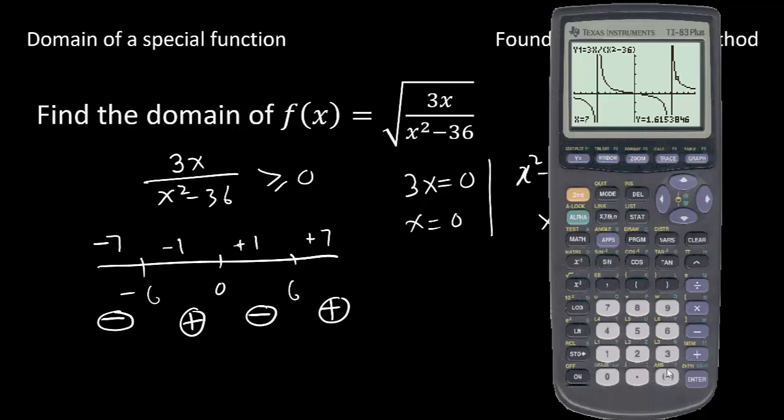So we write our domain as negative 6 to 0. 0 has closed. Negative 6 open. And then 6 to infinity, both open. And we connect with union symbol. And this is the domain of this function. And we are done.